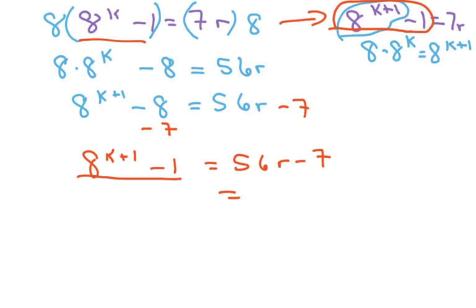And this side, I'm just going to factor out, it's supposed to be divisible by 7. So I'm going to factor out a 7, this is going to be 8r minus 1.